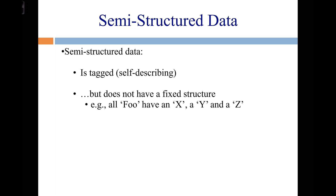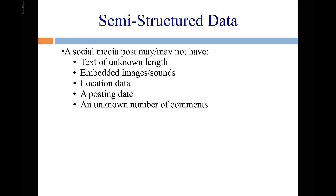If you had JSON where there was an additional rule that every JSON object had to have fields X, Y, and Z, then it would just be structured data. Going back to the Facebook example: a post may or may not have text, it might have pictures, it might have text and pictures. It might have a posting timestamp, it might have geodata, a location, comments — lots of different things that some posts might have and some might not.